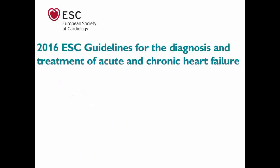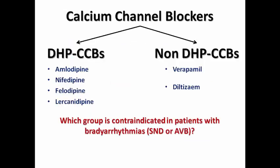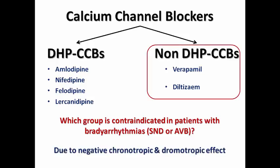In the 2016 ESC guidelines for heart failure, there was a clear Class III recommendation to avoid diltiazem or verapamil in patients with heart failure with reduced ejection fraction — the same contraindication is maintained in the 2021 guidelines. Verapamil and diltiazem are also contraindicated in bradyarrhythmias due to their negative chronotropic and dromotropic effects. So non-DHPs are contraindicated in both LV systolic dysfunction and bradyarrhythmias.